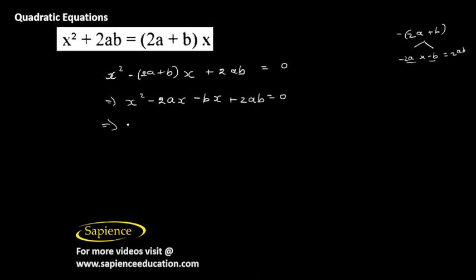And from the first two terms x can be taken common, x into x minus 2a, and from the next two terms we can take a minus b common outside, so minus b into x minus 2a equal to 0.